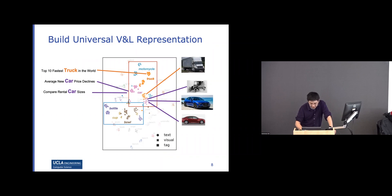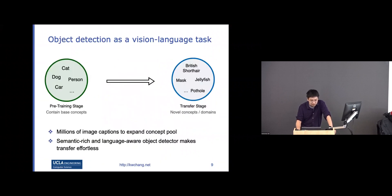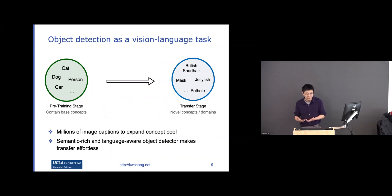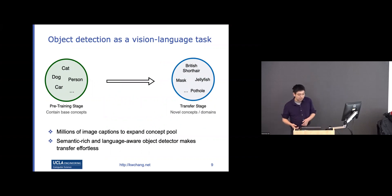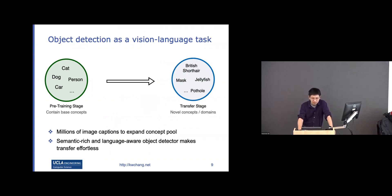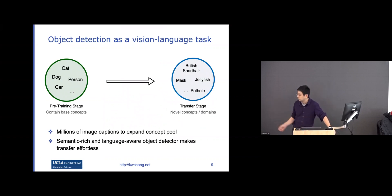This follows a pre-training and fine-tuning framework. The hope is that during pre-training we have some well-aligned basic objects, and then with a lot of noisy data — weakly supervised or even unsupervised — we can align those two spaces. Then later we can identify more complicated scenes.